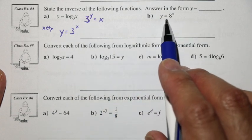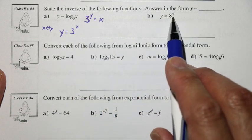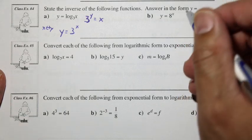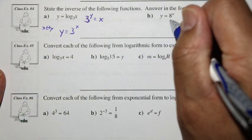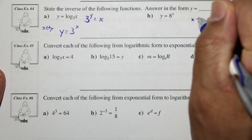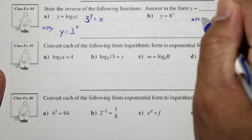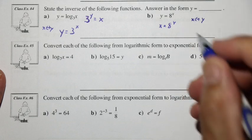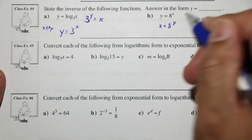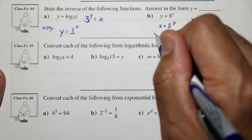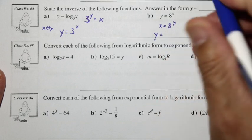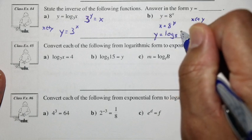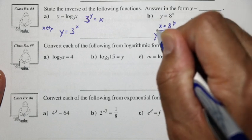In this one, we have y is equal to 8 to the x — it's in exponential form. When we take the inverse by replacing x with y, we have x is equal to 8 to the y. We can rewrite this as y is equal to log base 8 of x.